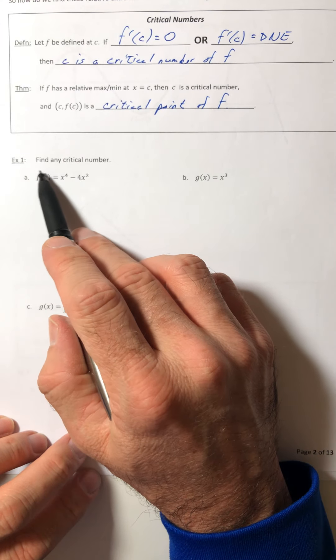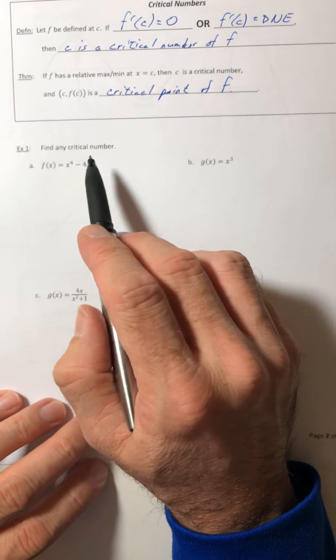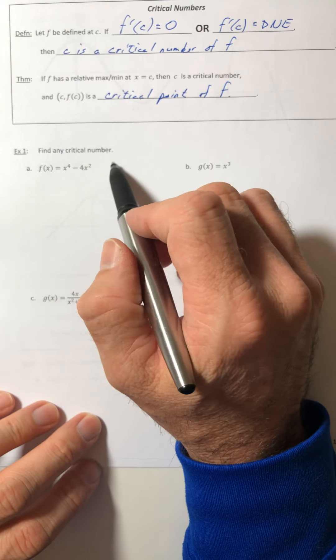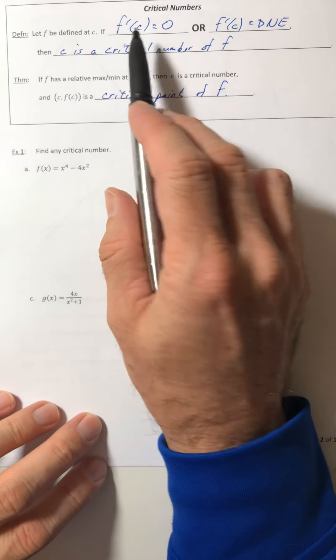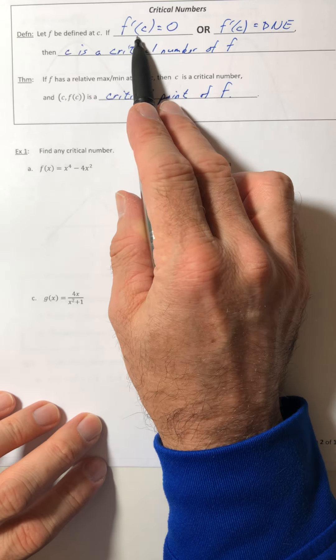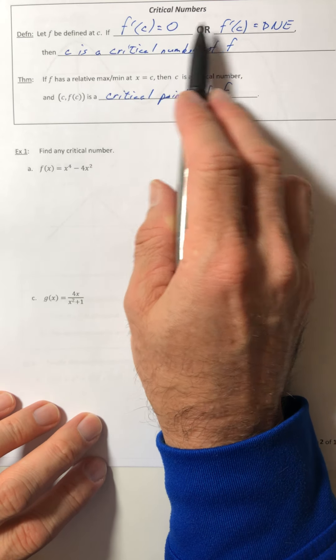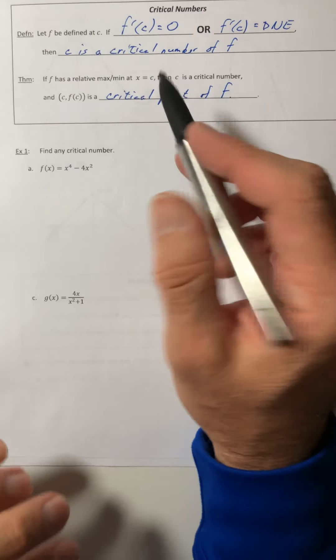Okay, let's go ahead and find any critical number. So the critical numbers, when you're looking for them, they're dependent on the derivative. And it's going to be either case from when we go to solve them.